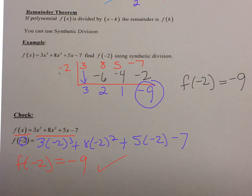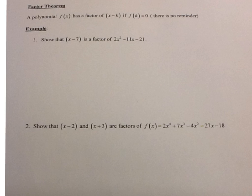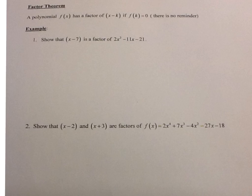Now let's talk about the factor theorem. A polynomial f of x has a factor of x minus k if f of k is equal to 0, which means there is no remainder. You actually learned this in Algebra 2, and we went over it already this year. With this theorem, when we have a big polynomial, we can actually factor it, even though we didn't learn a particular way to factor that type of polynomial.